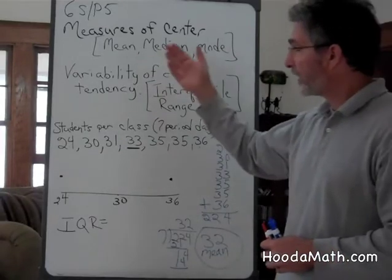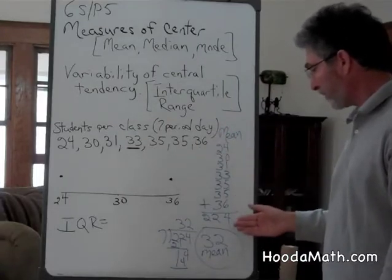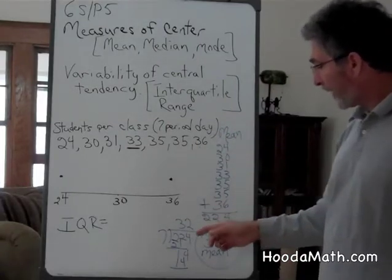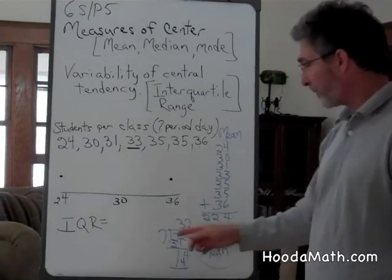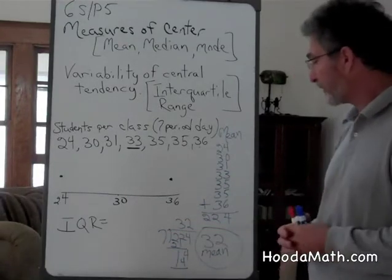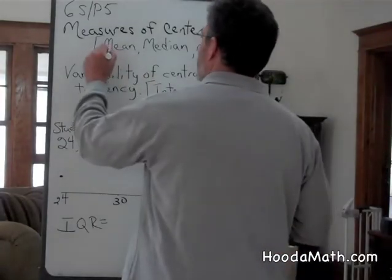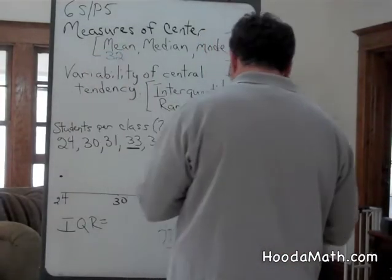If we wanted to find out the mean, we would add up the total number of students, divide that number, 224, by 7, or the amount of classes or periods in a school day. The mean is 32 students per class.